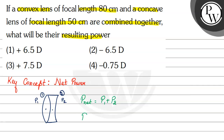और power P is equal to होता है 1 by focal length in meters, या फिर होता है 100 by focal length in centimeters.